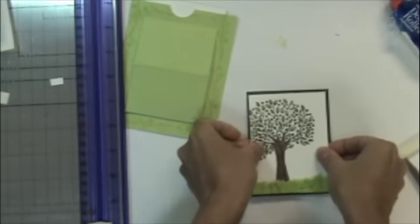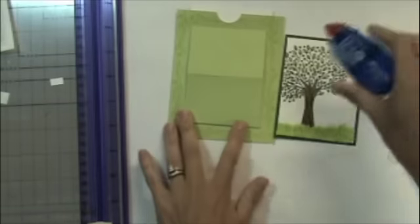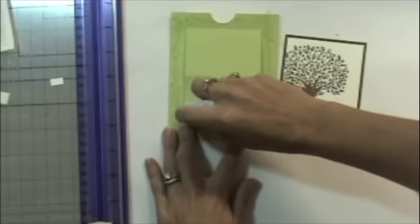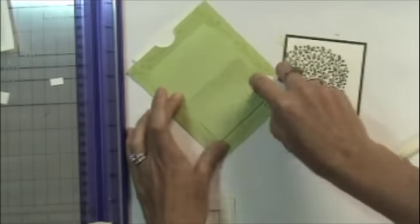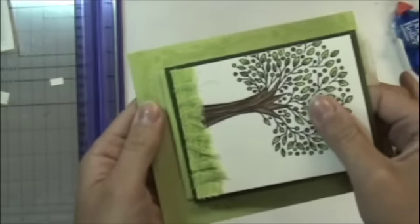Now I'm adding my stamped image to the green mat. I used pop dots for that. Just for a little added dimension. Now when you adhere the stamped image you only want to put adhesive on the bottom of that window. Just below the scored line only.